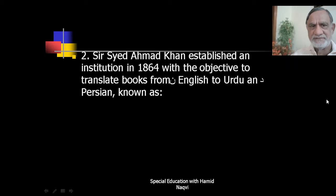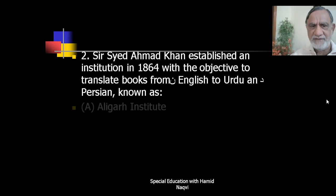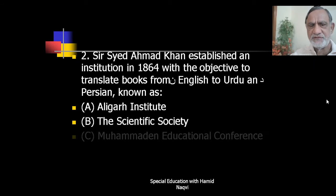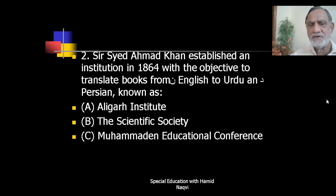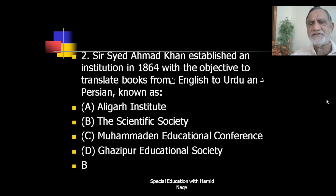Next: Sir Sayyid Ahmad Khan established an institution in 1864 with the objective to translate books from English to Urdu and Persian. The options were Aligarh Institute, the Scientific Society, Mohammedan Educational Conference, or Ghazipur Educational Society. The correct answer is B — the Scientific Society.